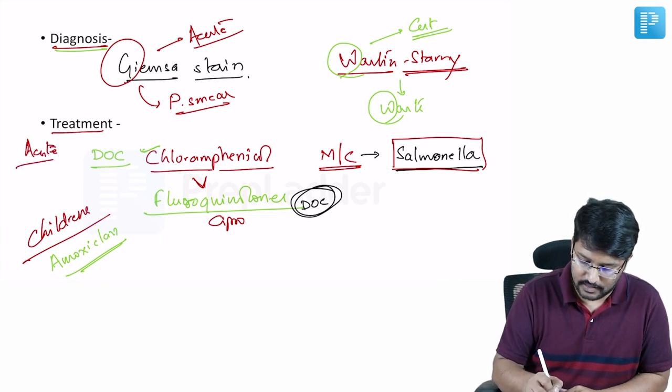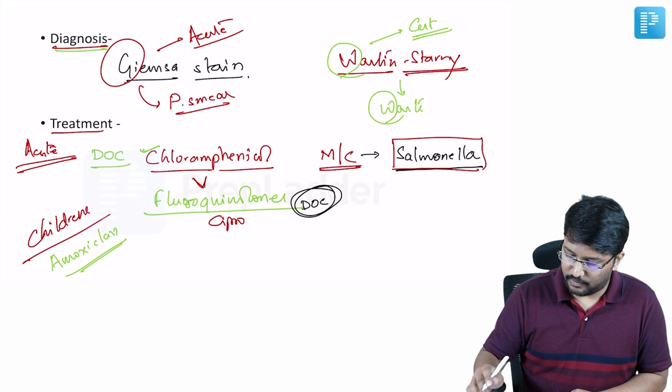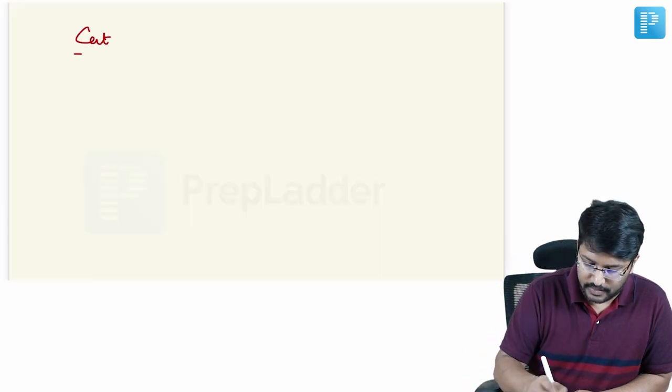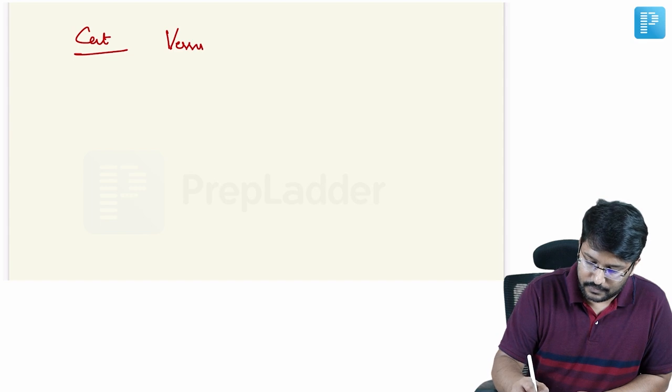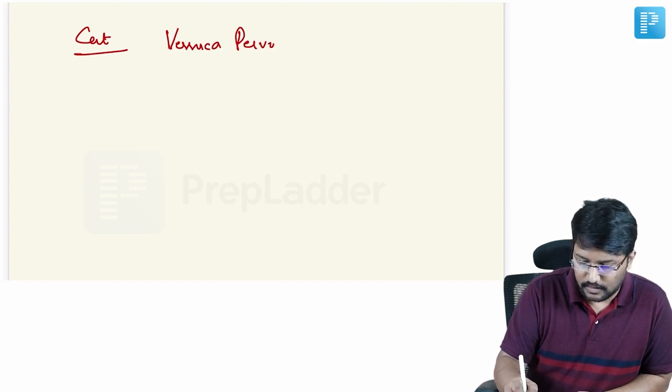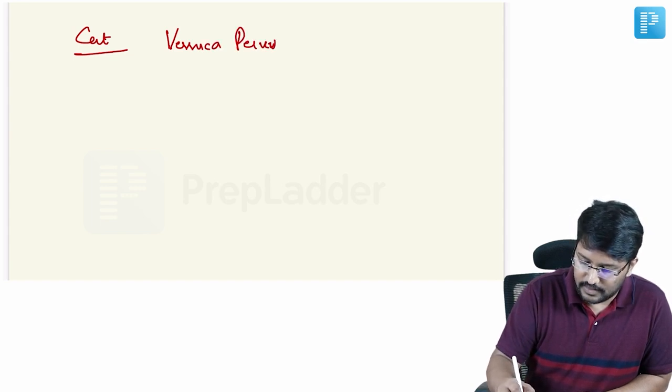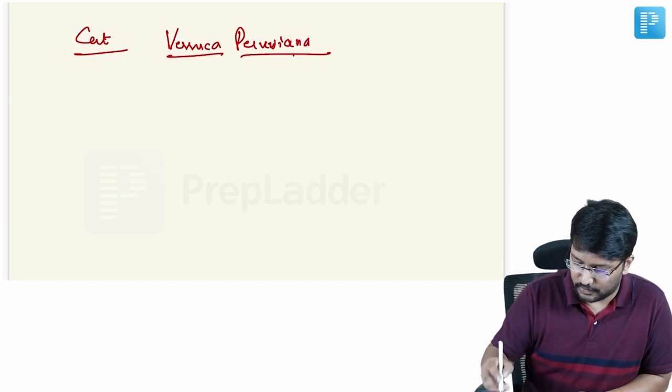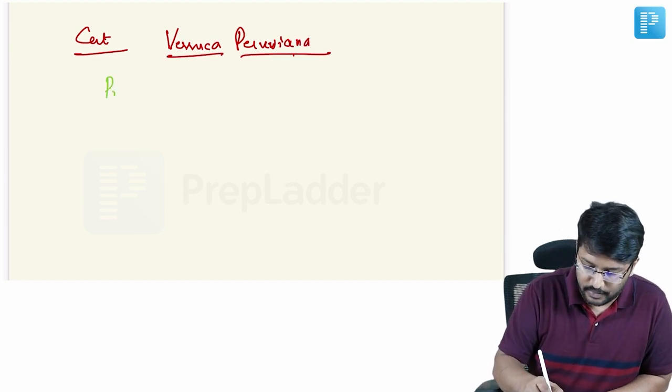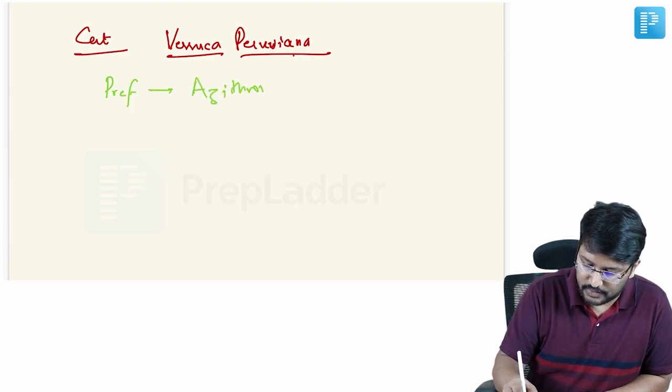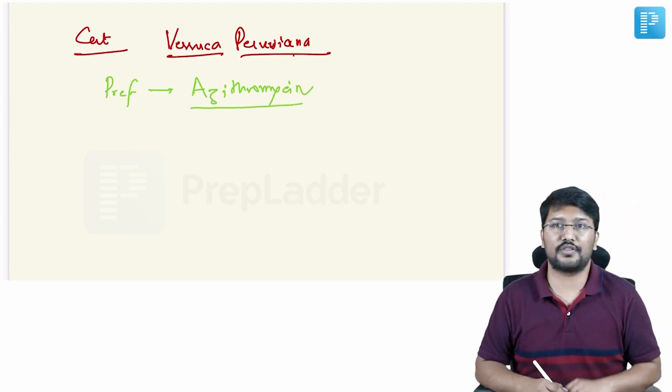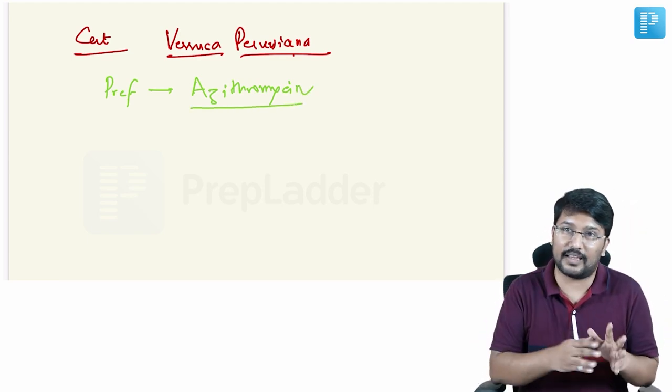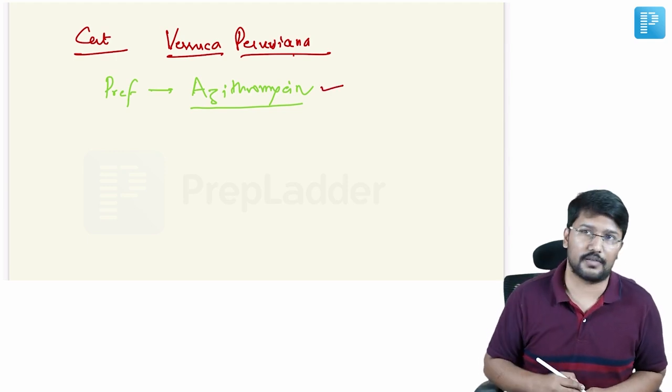Then when we are talking about cutaneous phase, the preferred drug is azithromycin now. The preferred drug is azithromycin. So dermatologists prefer to give this because the patients require long-term therapy and azithromycin gives us a flexibility to give weekly pulse doses. So that is why this is the preferred drug.